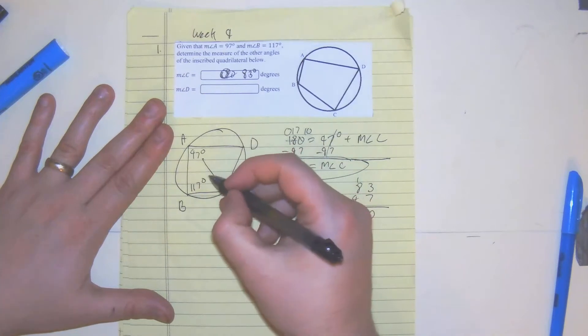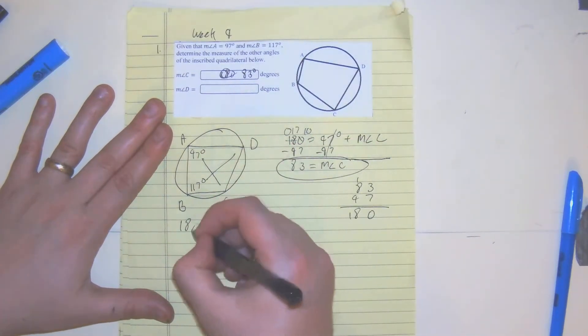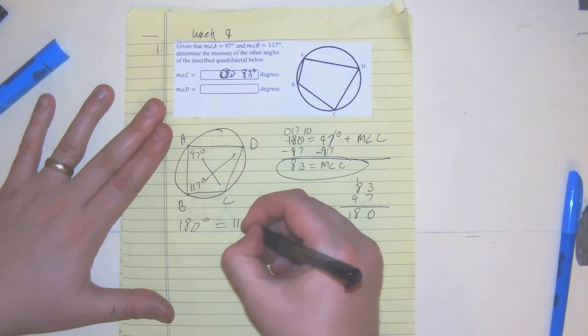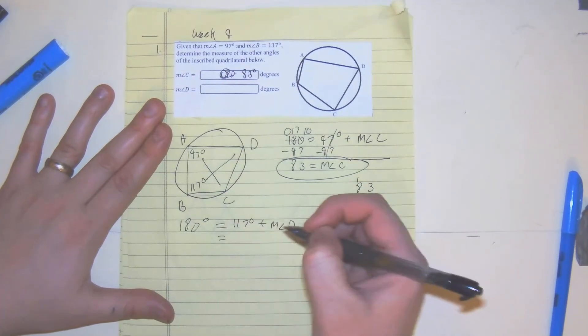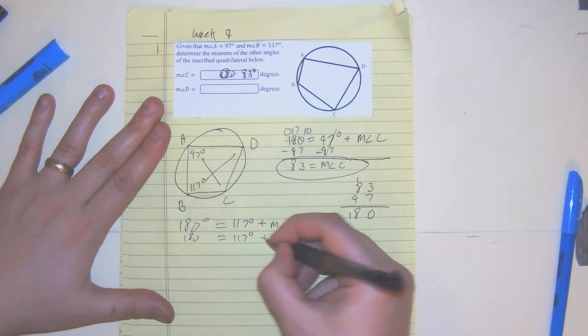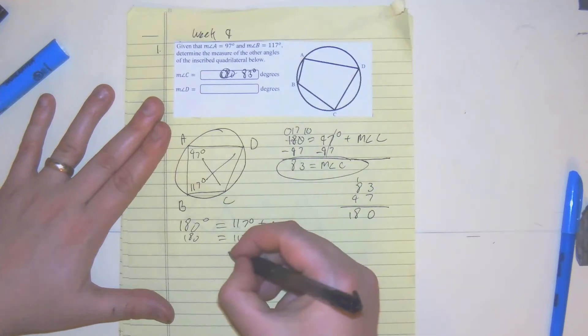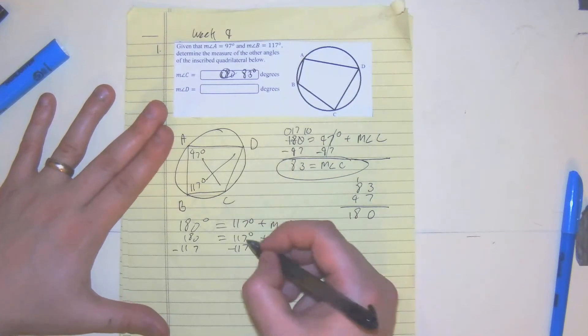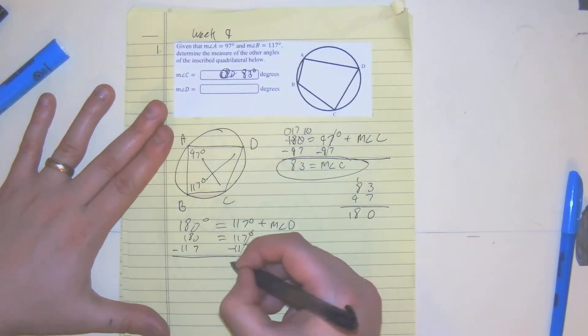Now we want to find the measure of angle D. D goes with measure of angle B, so our supplementary degrees is equal to 180, is equal to 117 degrees plus the measure of angle D. So that's the relationship. The inverse of addition is subtraction, so we subtract 117 to both sides. Cancels, so we get the measure of angle D is equal to...